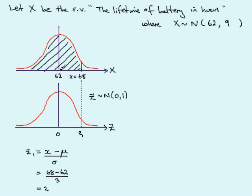You can really see this anyway because the standard deviation was 3. So 62 plus 3 gives us 65, and if we add another 3, that brings us up to 68. So 68 is essentially 2 standard deviations away from the mean, and that's what Z represents.